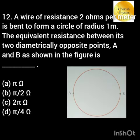A wire of resistance 2 ohms per meter is bent to form a circle of radius 1 meter. The equivalent resistance between its two diametrically opposite points A and B is?